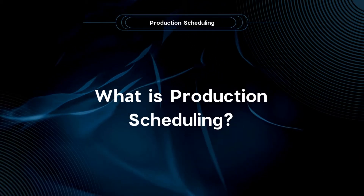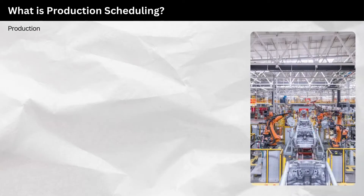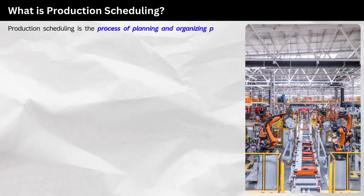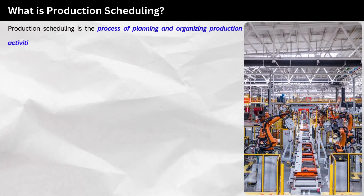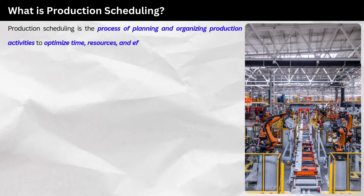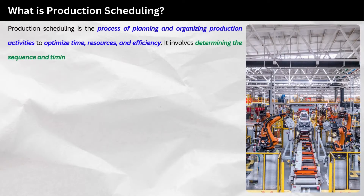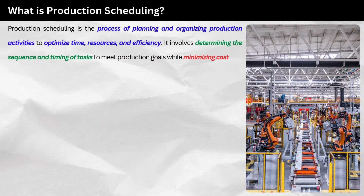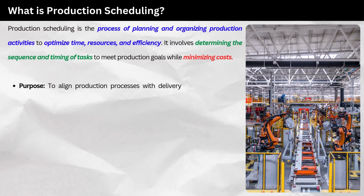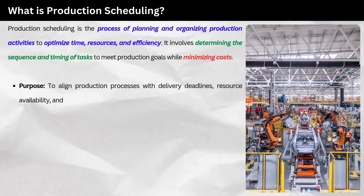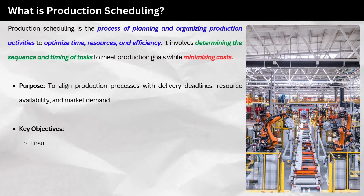What is production scheduling? Production scheduling is the process of planning and organizing production activities to optimize time, resources, and efficiency. It involves determining the sequence and timing of tasks to meet production goals while minimizing costs. Its purpose is to align production processes with delivery deadlines, resource availability, and market demand.